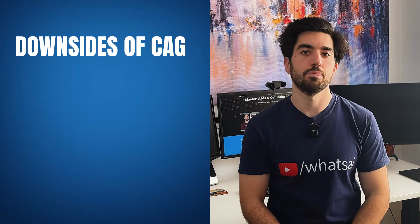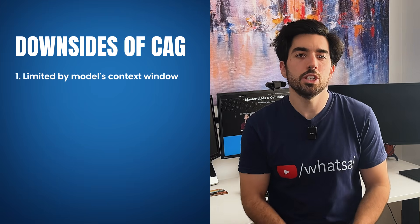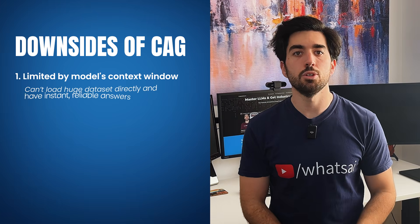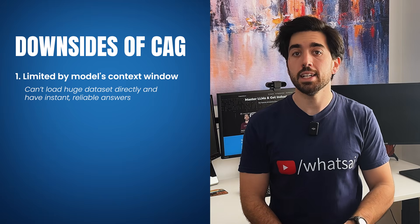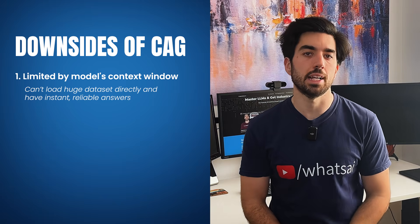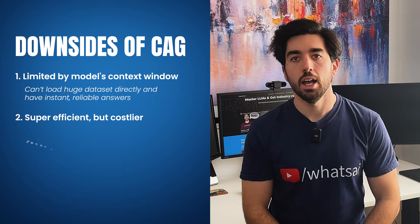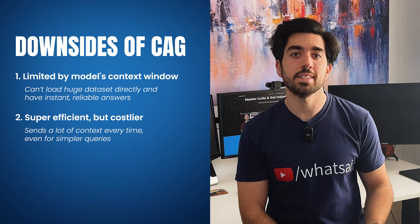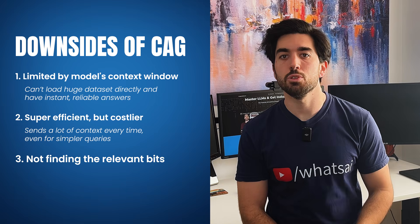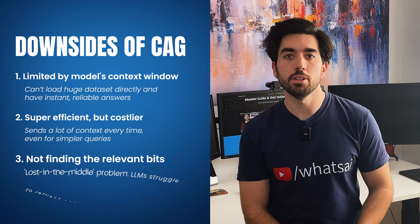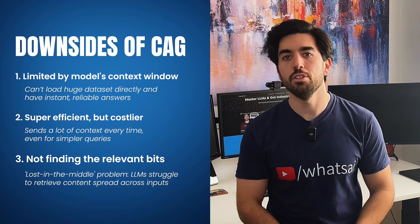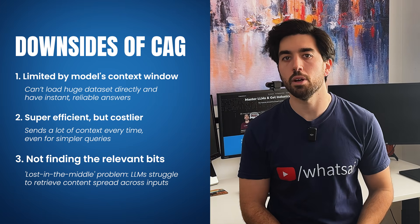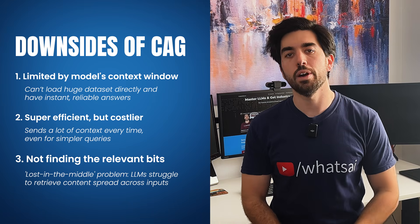But here are some important caveats. First, you are limited by your model's context window, which is currently around 128,000 tokens, or about 100,000 words for most models — meaning you can't simply load a huge dataset of millions of rows and get instant reliable answers. Second, it's costlier, as you are still sending a lot of context every time to the LLM, even for simpler queries, whereas RAG sends just the necessary bits. Third, you can get issues with sending too much information. An important challenge is the lost-in-the-middle problem: LLMs often struggle to retrieve specific content distributed across multiple parts of the input, whereas RAG pinpoints only the required information.